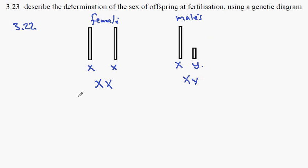So in a genetic diagram, we can write down the parents are XX, and we're going to cross with the male, which is XY.